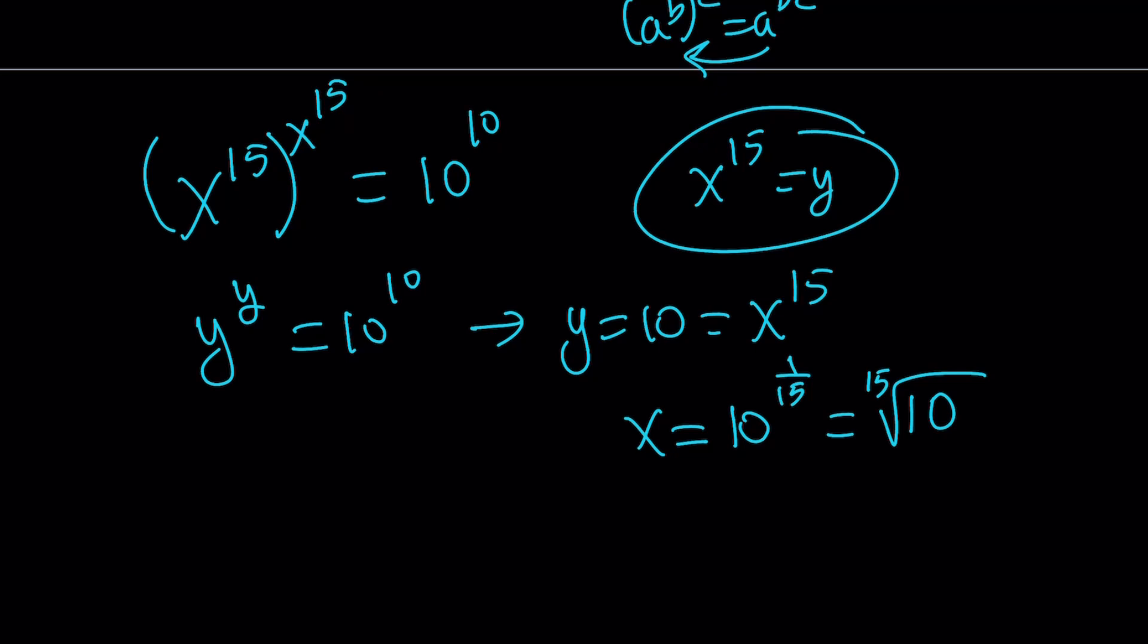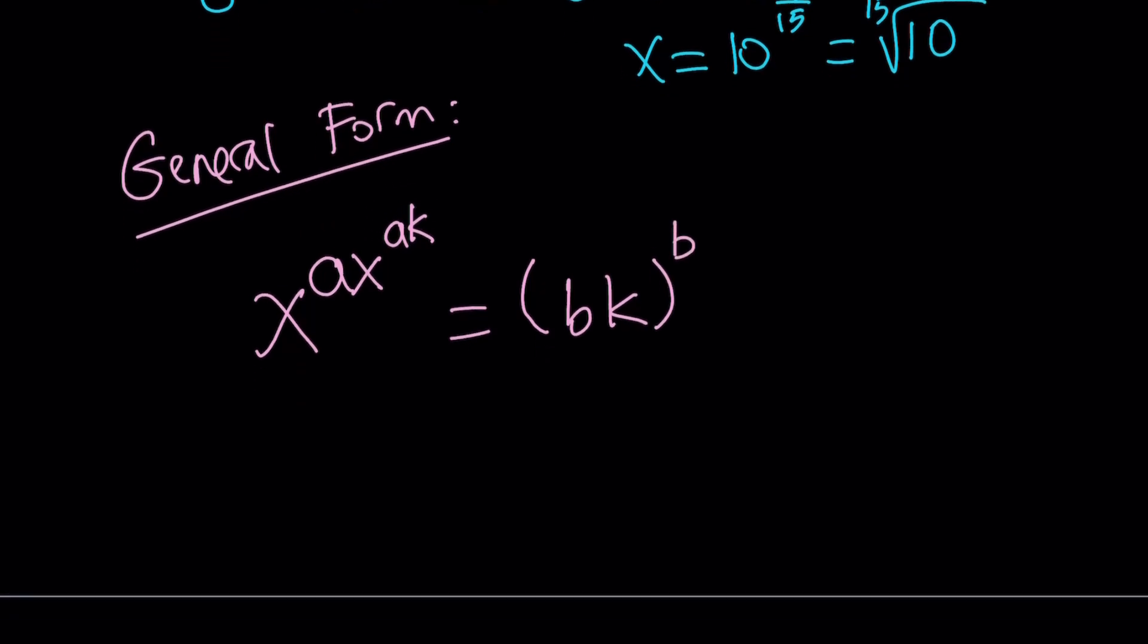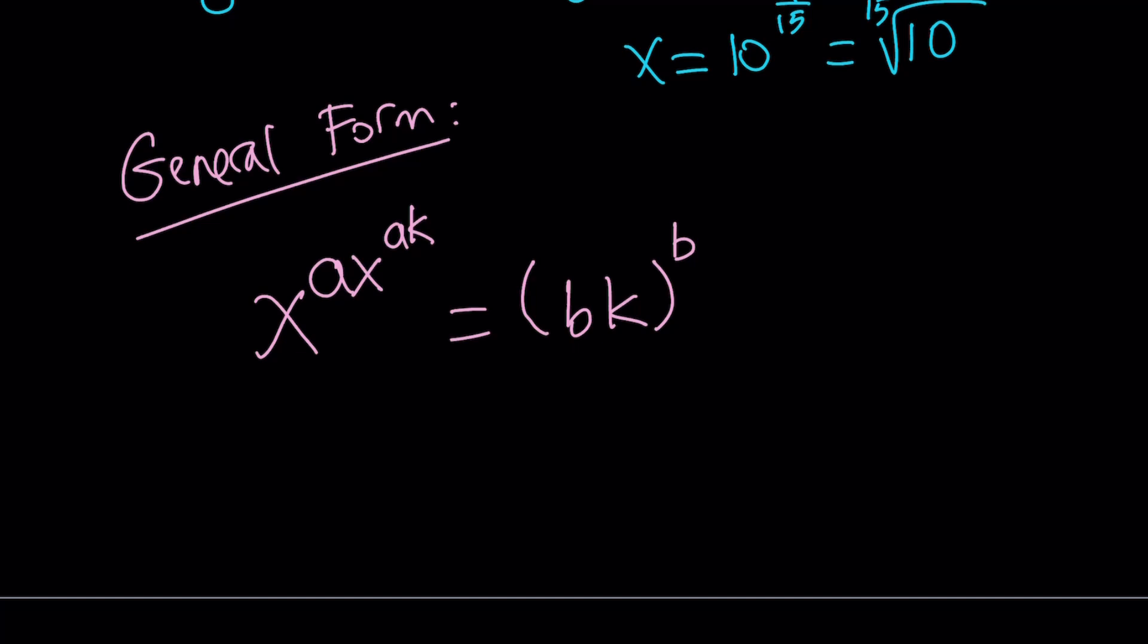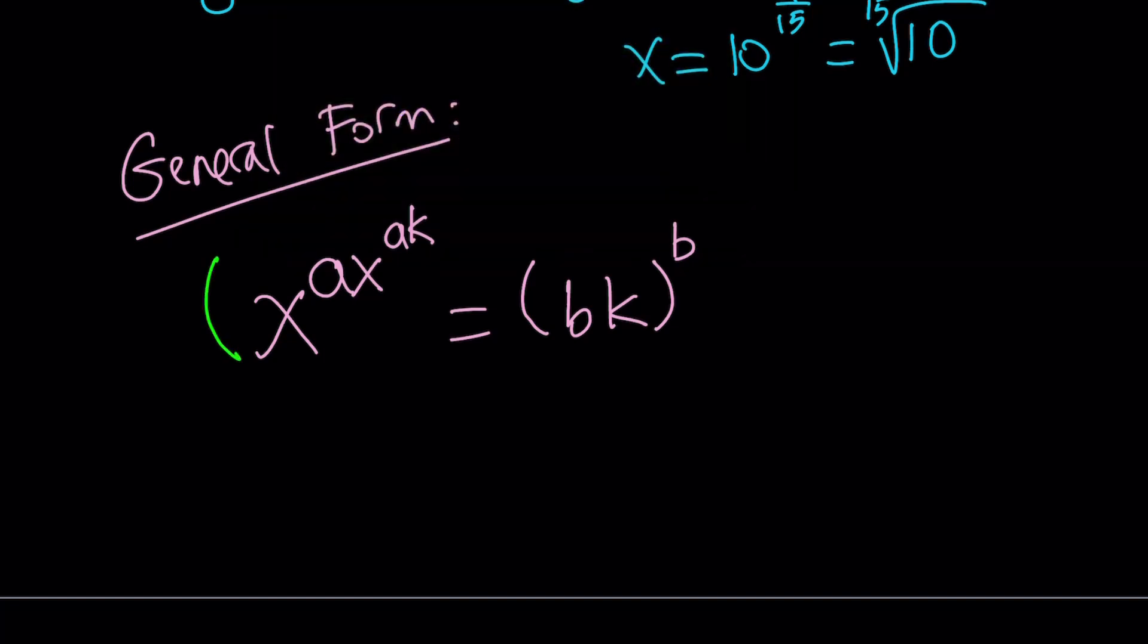Let's go ahead and take a look at the general form and see how that correlates with this. The general form of these equations. Now you might be wondering if you can come up with a problem like this. You could definitely do that. So I'm going to show you what that looks like. The general form is going to look like this: x to the power ax to the power ak, and this is equal to bk to the power b. So notice that ak and bk are both multiples of k. So that makes sense if you raise both sides to the power k. That's what we're going to do to solve this problem in the general case which is kind of cool because you're not given the variables or what the values are but you can still solve it.